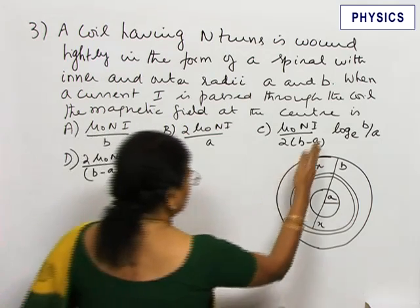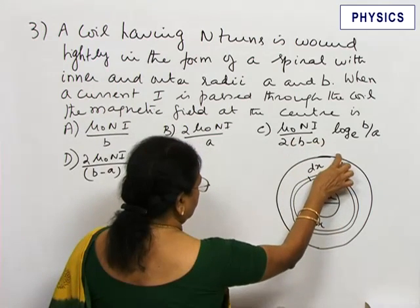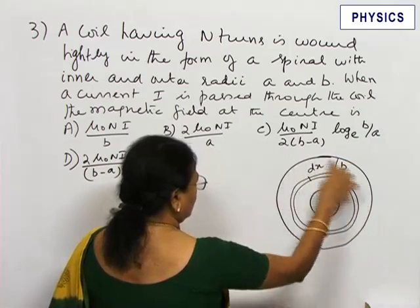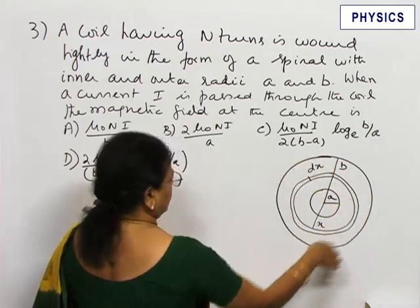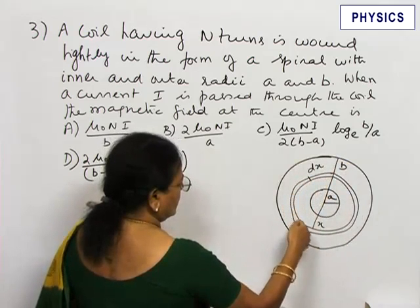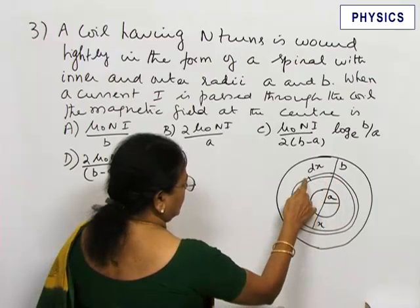This is the cross section of the coil. The inner radius is A, outer radius is B. The coil is wound in the form of a spiral in this plane like this. Consider an element of radius x and thickness dx.